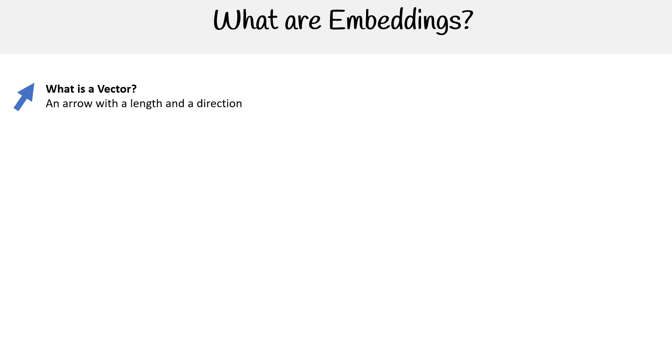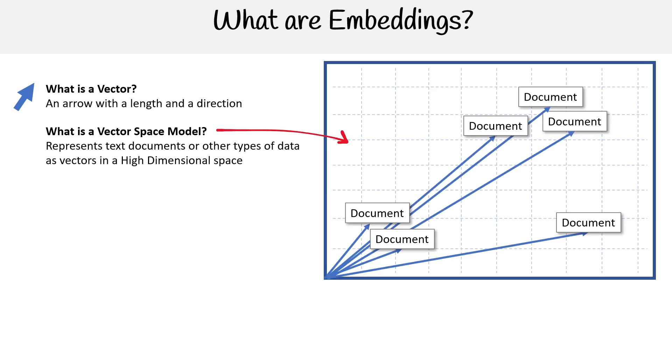But the reason why this matters is that a vector needs to exist in a vector space. And so what is a vector space model? It represents text documents or other types of data as vectors in a high dimensional space. So right now, we're only looking at a 2D axis, but in reality, this would be in at least a 3D axis.